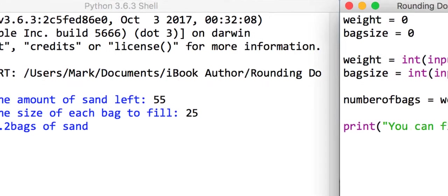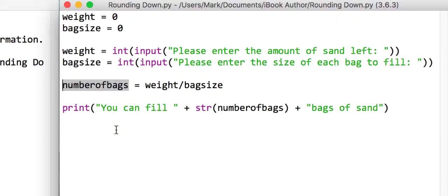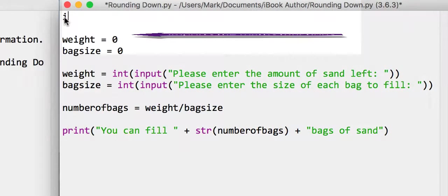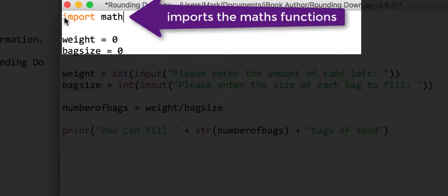What we're going to need to do is alter this variable here, called number of bags, so that we can actually only fill 2 complete bags of sand. We're going to need to round it down. The first thing we'll do is move the program down a bit and import the math library.